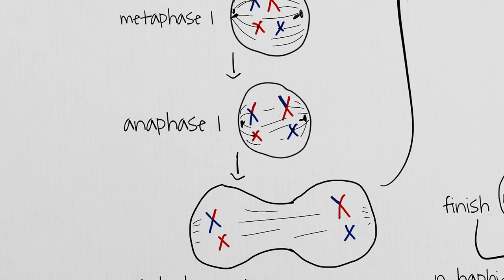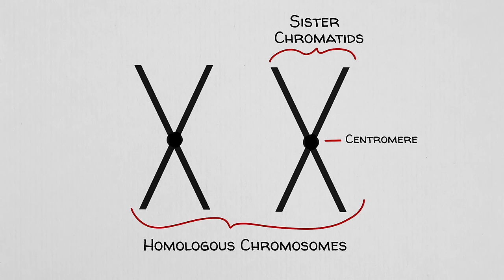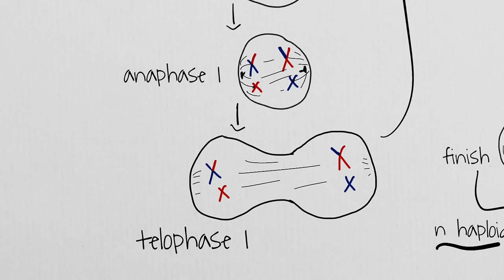When spindle fibers shorten in anaphase 1, homologous pairs are separated. The alleles of genes located on non-homologous chromosomes separate without influencing each other. Because centromeres are still intact, our chromosomes are in the familiar X shape with sister chromatids connected. Telophase 1 and cytokinesis usually overlap, but we won't form the nuclear membranes or uncoil DNA into chromatin just yet. With meiosis 1 complete, we now have two haploid daughter cells. Meiosis 1 and meiosis 2 are consecutive, with no interphase separating them.